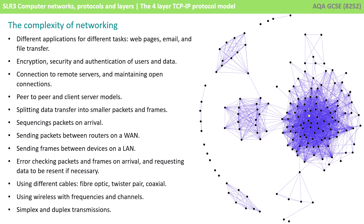Networking is a very complex operation. There's lots of different things to consider, for example, the different applications and tasks that we might perform, such as web pages, emails and file transfer. We have to think about encryption and security of data and authenticating user access to the data over a wide or local area network.